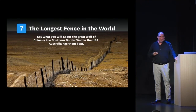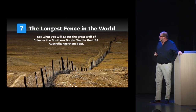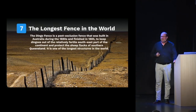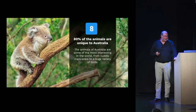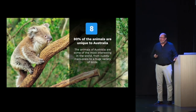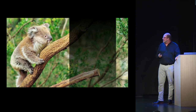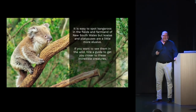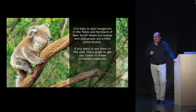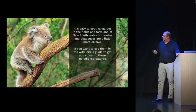Australia already has the world's longest fence — built to keep dingoes out and away from the livestock of Australia, protecting the flocks of sheep. Eighty percent of the animals are unique and endemic to Australia — from marsupials everyone thinks are cuddly until their claws go right into you, to an incredible variety of endemic species. If you want to see them, hire a guide — kangaroos are easy to see, but koalas are much more difficult.